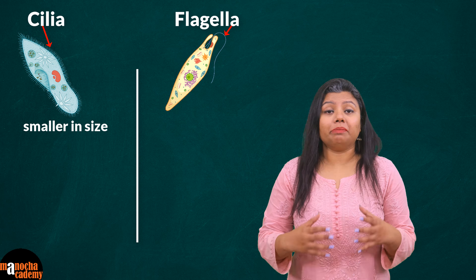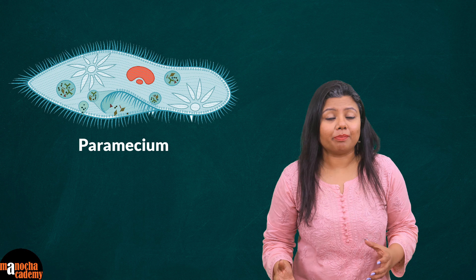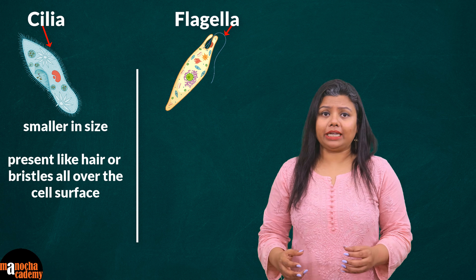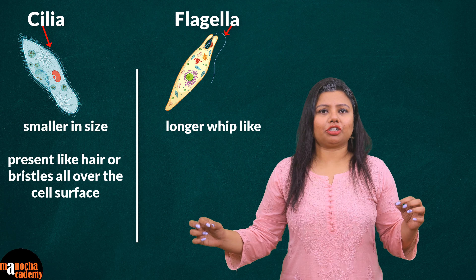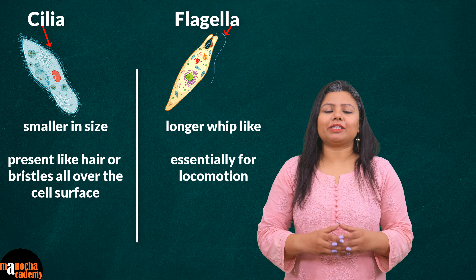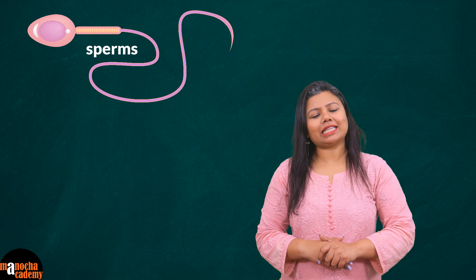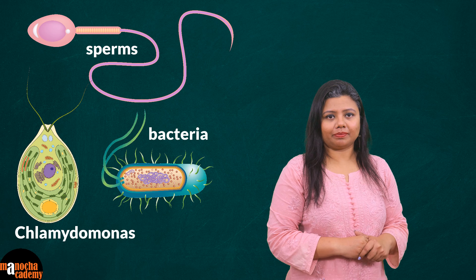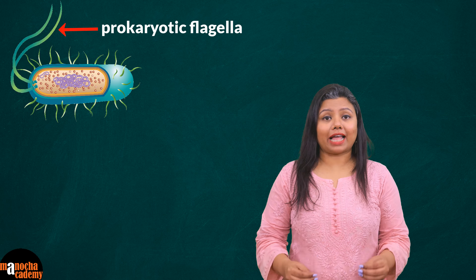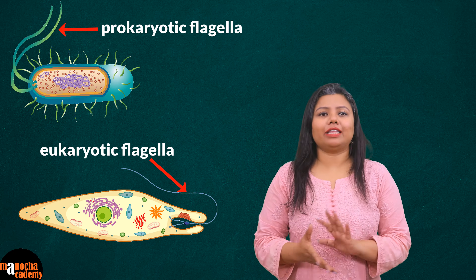Cilia and flagella have similar structure; however, cilia are much smaller in size and usually many are present all over the cell, as seen in paramecium. Flagella is a very elongated, whip-like structure that helps in locomotion, for example in sperm cells and in bacteria.